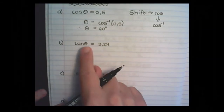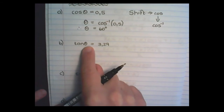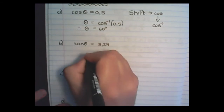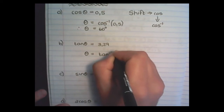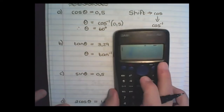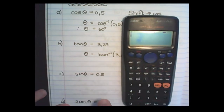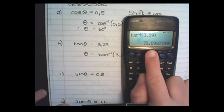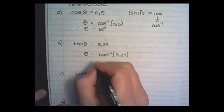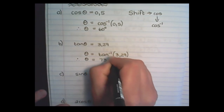In the second example, we have tan theta equals 3.29, and we want to find the angle size for which this is true. I follow the same procedure as before and I am going to reverse the tan ratio. On the calculator I press shift, tan, 3.29, close the bracket, equals, and the answer is 73.09 degrees. Therefore, theta is 73.09 degrees.